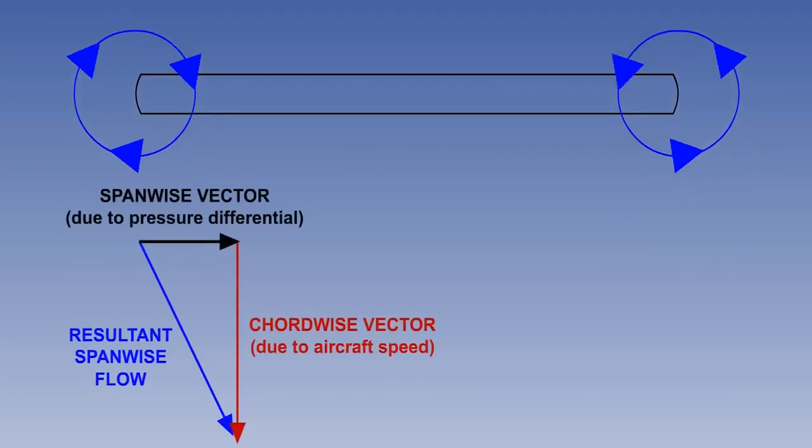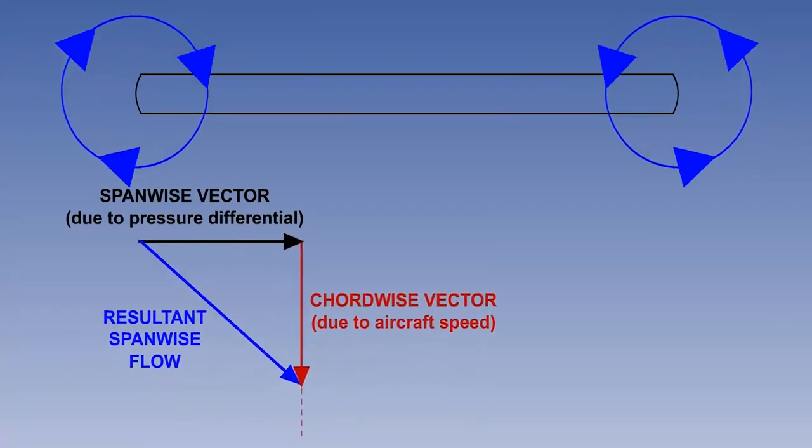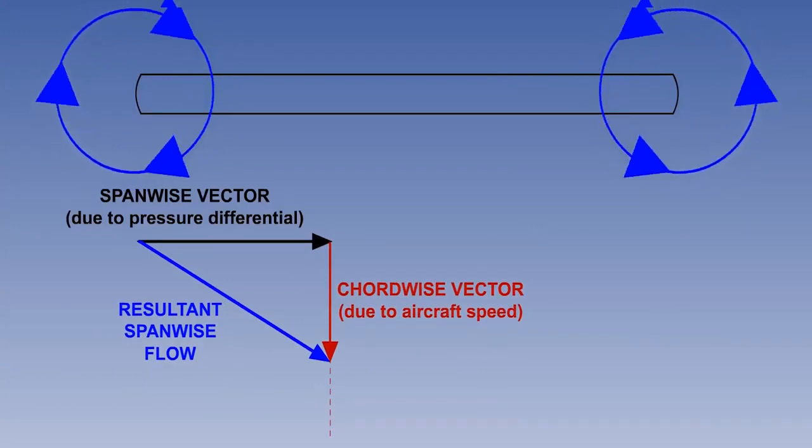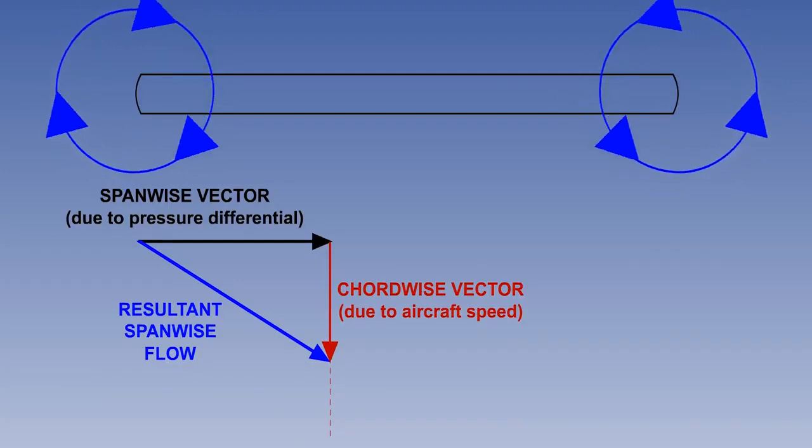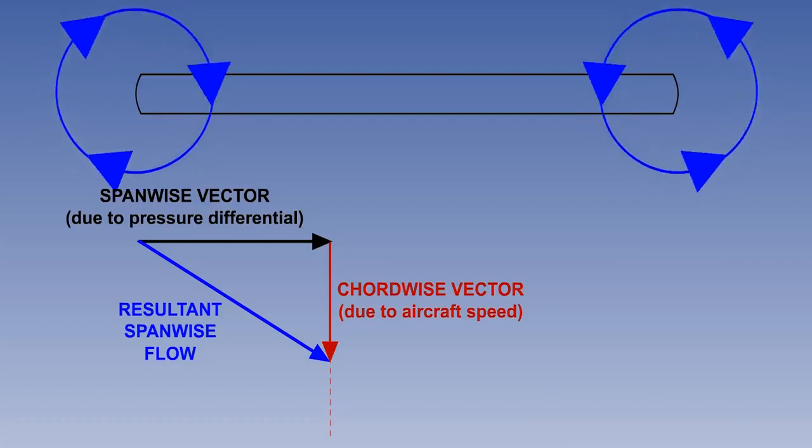The arrangement of the forces could be seen with the vector triangle. At higher angles of attack with a lower IAS, the shape of the triangle will change. As speed decreases, the chordwise vector will shorten and the spanwise vector will lengthen, with the greater pressure differential that is creating the increased lift. The result is stronger wing tip vortices.